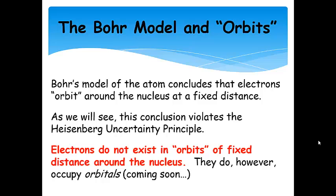Electrons don't exist in orbits of fixed distance around the nucleus. So, Bohr's model was incorrect in that conclusion, that there are not fixed distances around the nucleus that electrons exist in and orbit the nucleus. However, they do occupy orbitals, and so we're going to be talking about orbitals very soon. So, a slightly different word, but a very different meaning.